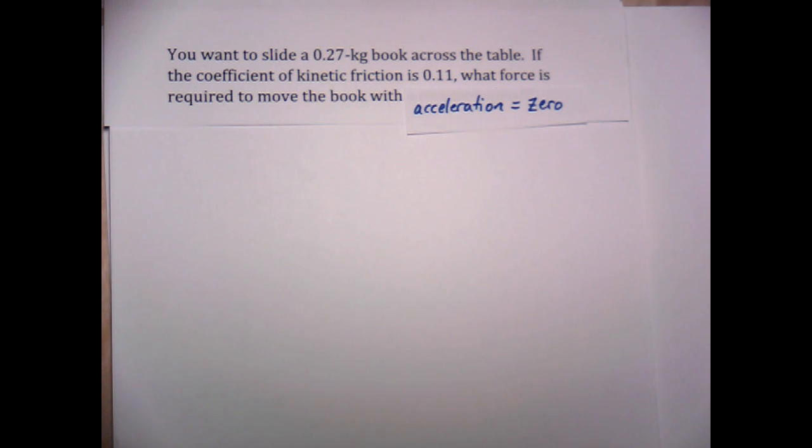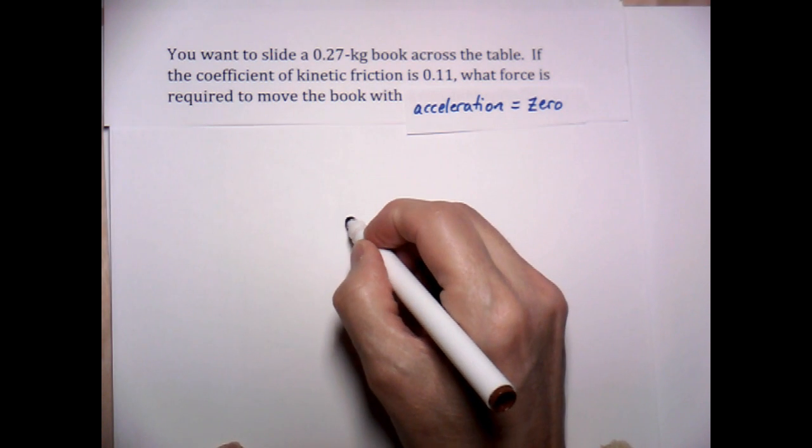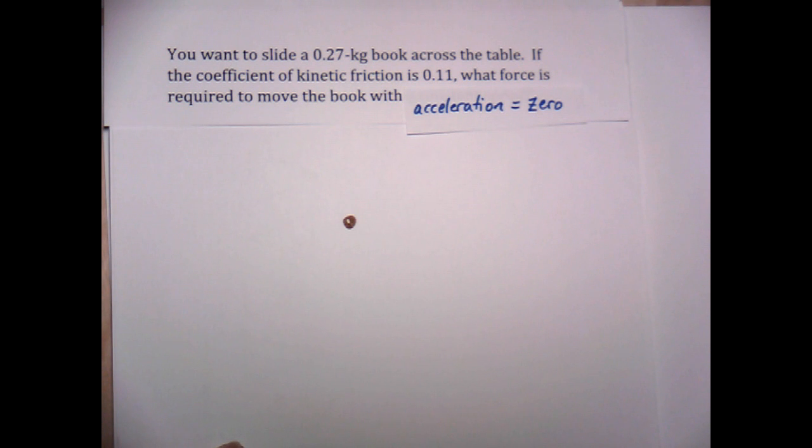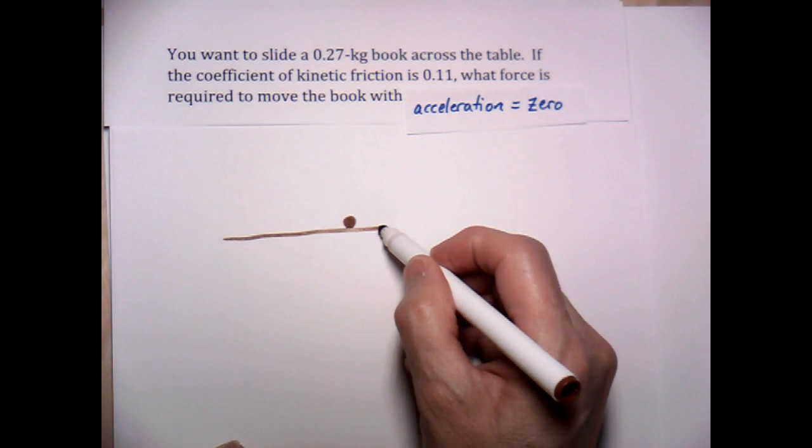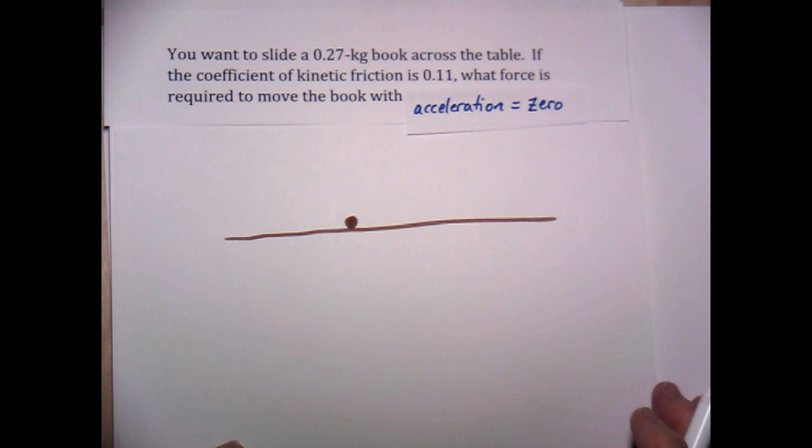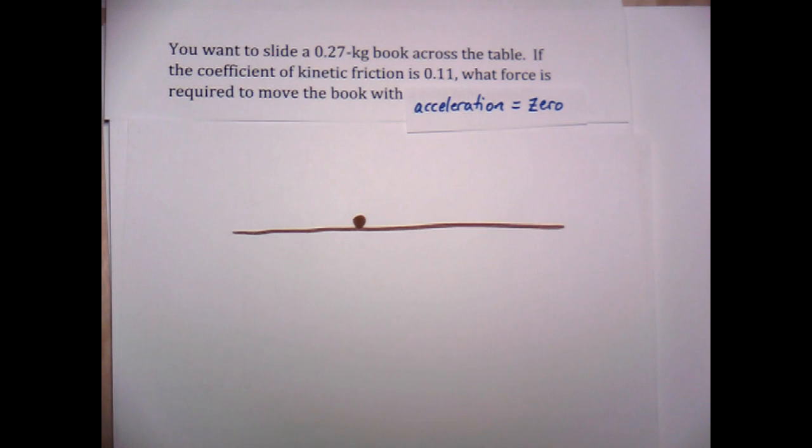So then we start off in the usual way, which is to draw ourselves a free body diagram. So here we go. Here is the book represented by a dot. And this book is sitting on a table. And of course, let me tilt that so it actually looks flat. This is implied to be horizontal.